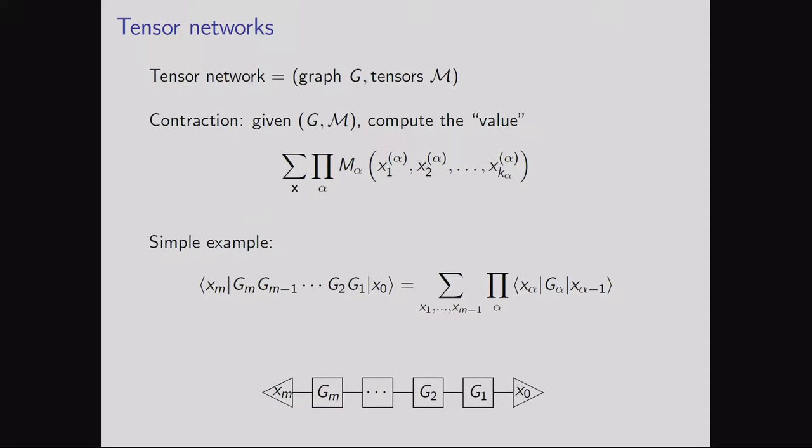A tensor network is a graph to whose vertices we associate tensors. There's a process called contraction by which we take pairs of tensors and combine them through matrix multiplication to get a new tensor. If we do this over and over again, eventually we get to a single number called the value of the tensor network. If we think of each of the edges as having a variable associated with it, the value can be expressed as a sum over all possible assignments of values to the variables of the product of the tensors at those values.